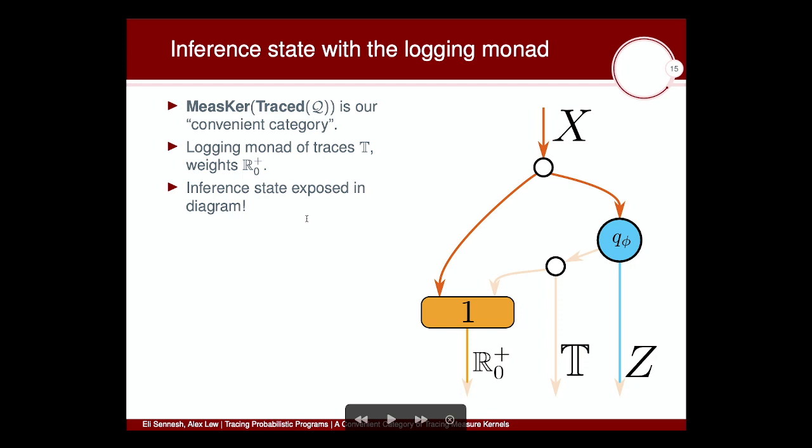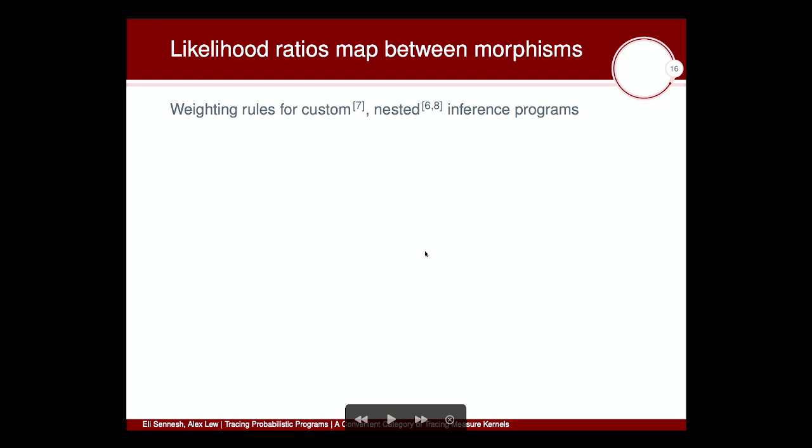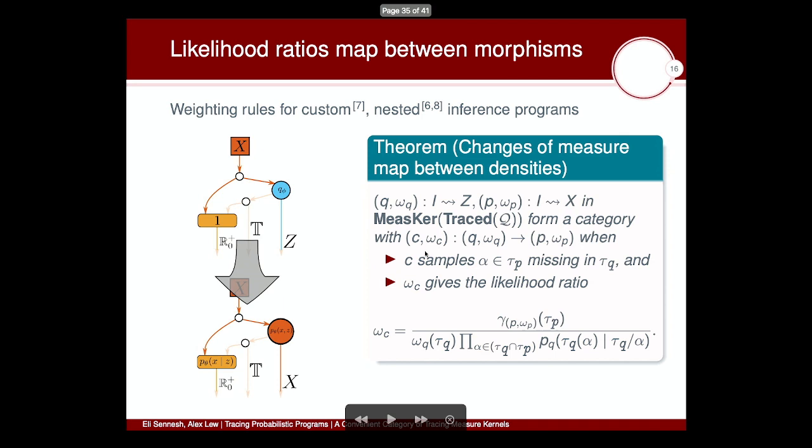Now, having this notion of an eager trace that we can write down as output, we just use the logging monad or writer monad to write down both that and a non-normalizing weight. This means that we now have a diagrammatic way of writing our nice Markov kernels in our convenient category of measure tracing measure kernels built on the QBS probability monad. Finally, what we can use all that inference state for, that we got with the logging monad, is to write general case weighting rules for transforming samples from one program into samples from another program, while getting the correct integral at the end. Now, we note that this forms a category, because by forming a category, it also means that these change-of-measure morphisms compose, which allows us to describe nested sampling techniques as well.